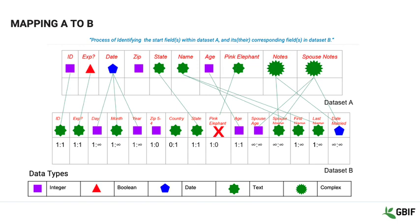Another type of relationship is a one-to-many. In these cases, there is a single field in dataset A that maps to two or more fields in dataset B — date is an example. You may also find cases where more than one field in dataset A contains data from more than one field in dataset B. Note fields are often guilty of this.